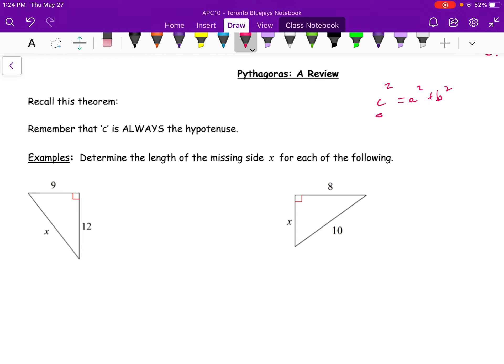So, example: determine the length of the missing side x for each of the following. And what I can see here is generally we like to call the hypotenuse c, and the other sides a and b. But I feel like we're sort of getting beyond that level. But regardless, I could say c squared is equal to a squared plus b squared. Now, c squared is just really x. So it's x squared is equal to 9 squared plus 12 squared.